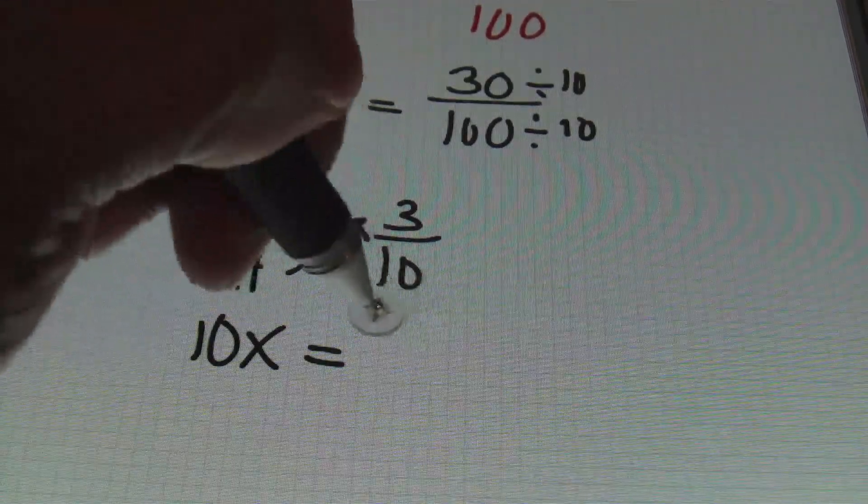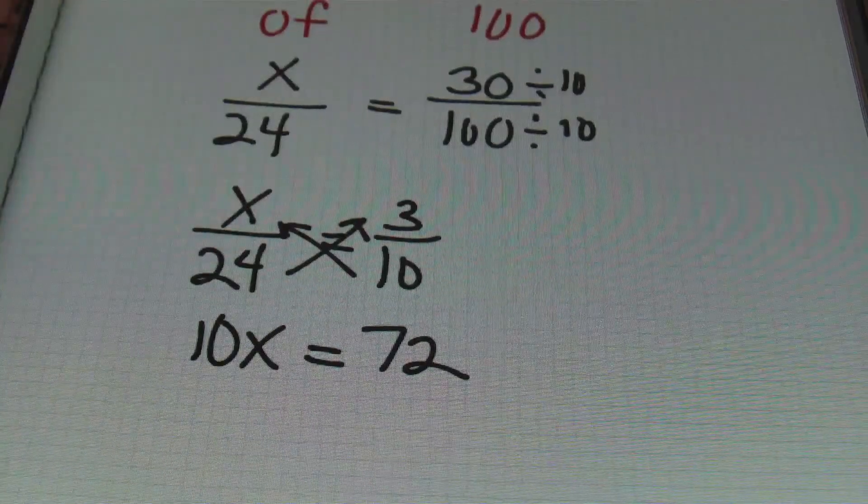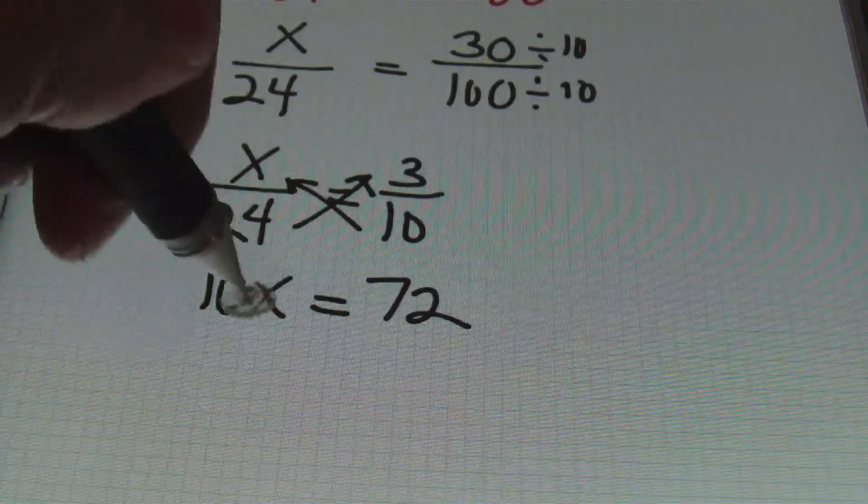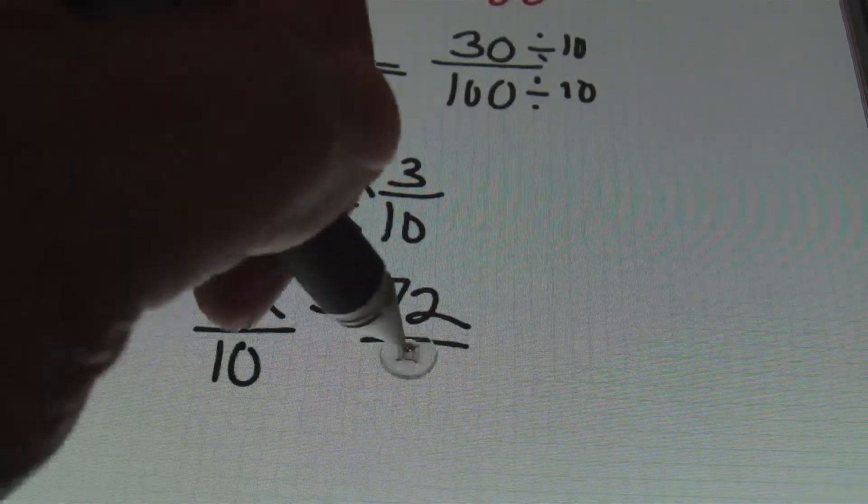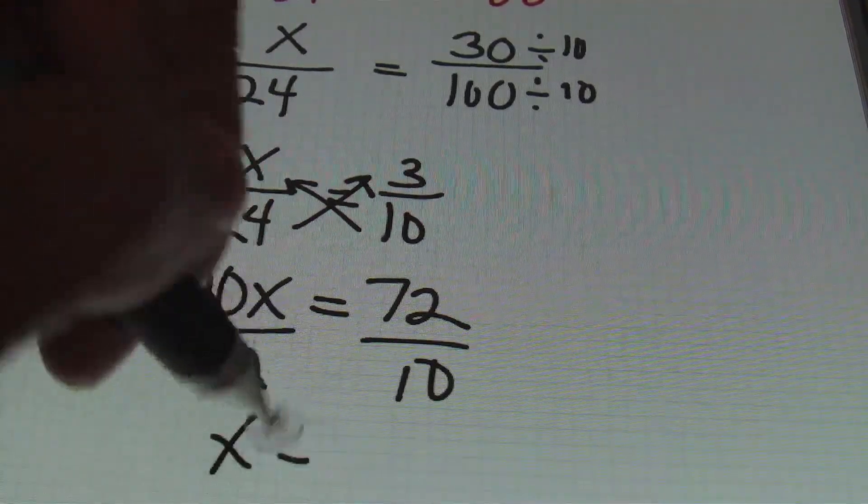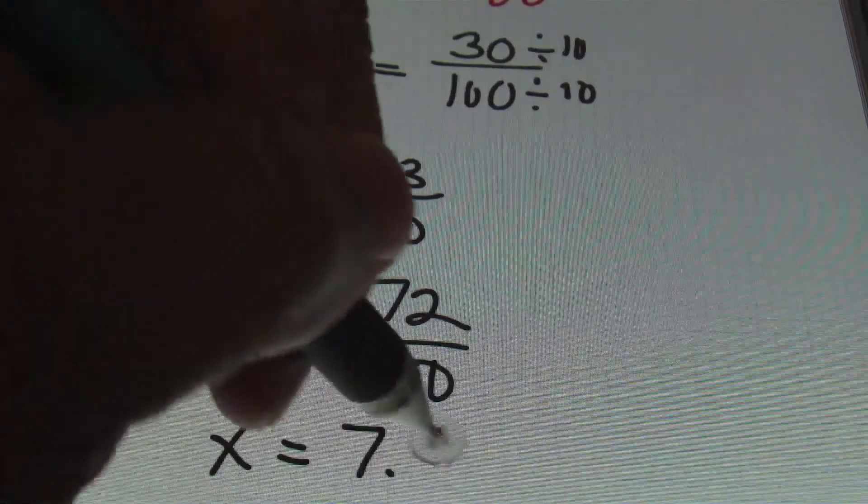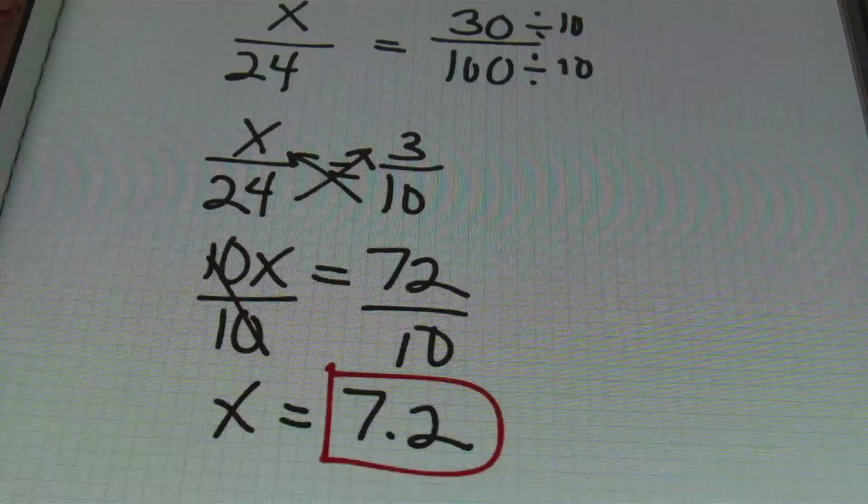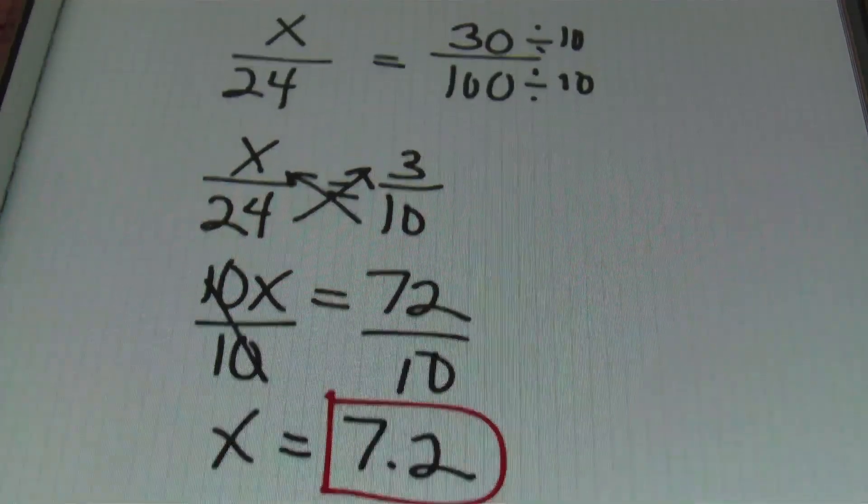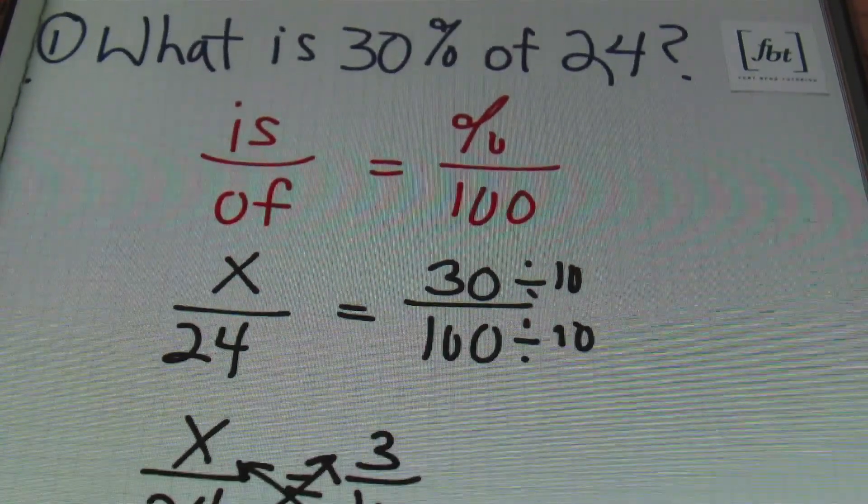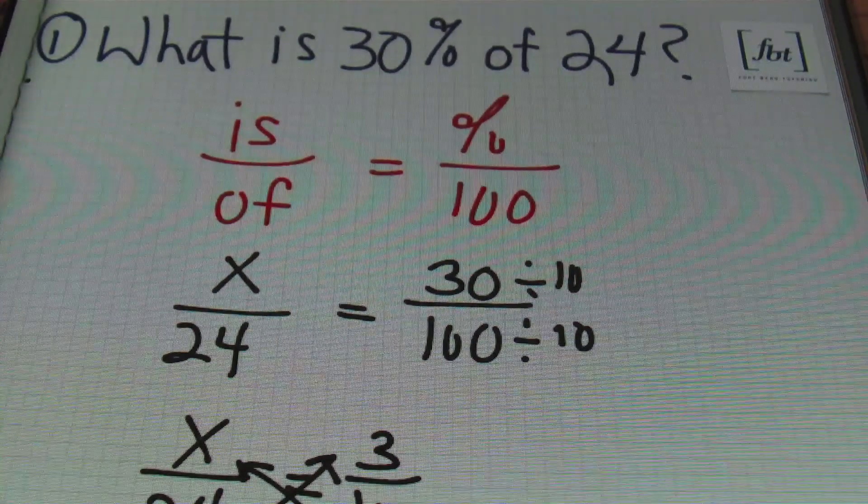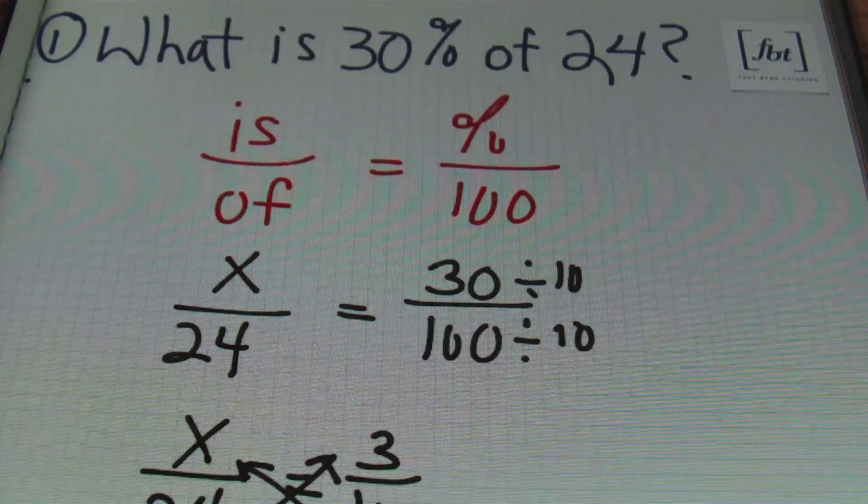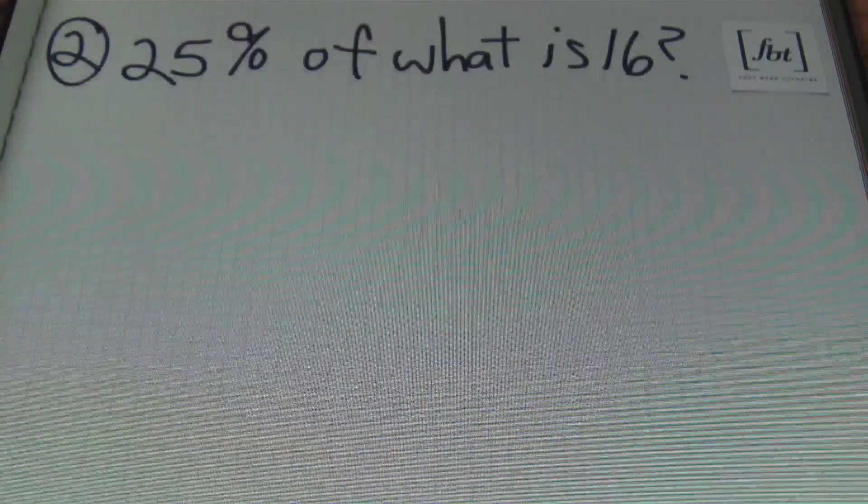I can rewrite this as x over 24 equals 3/10. Then I'm going to cross multiply. I have 10 times x, which is 10x, and 24 times 3 gives me 72. To solve for x, all we need to do next is divide both sides by 10, and 72 divided by 10, ladies and gentlemen, is 7.2.